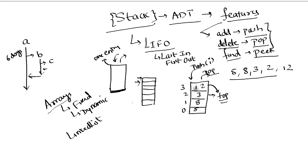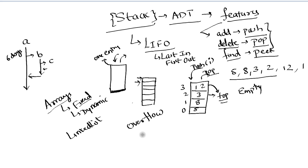Once the stack is full — say our fixed-length array has size four and all slots are used — if you try to add one more element, it will give you an overflow error, because you are trying to overflow the stack. On the other hand, if your stack is empty and you try to pop a value, it will give you an underflow error. So overflow is pushing onto a full stack, and underflow is popping from an empty stack.